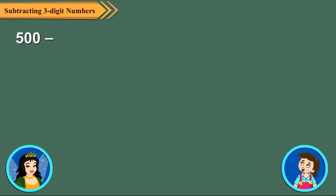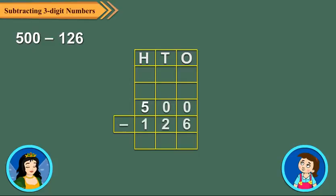Neha, how can you find 500 minus 126? Why not? It is similar to the example discussed. We first arrange the numbers in columns. Then subtract the ones digits. Here, 0 is less than 6. So we regroup.